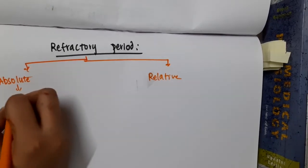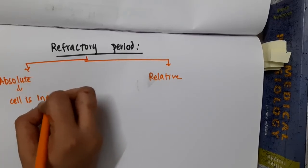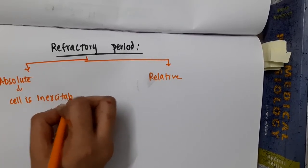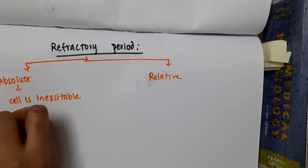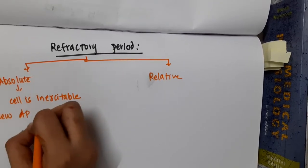Absolute refractory period: in this period the cell is inexcitable. Because the cell is inexcitable, new action potential cannot develop.